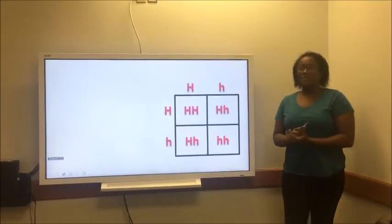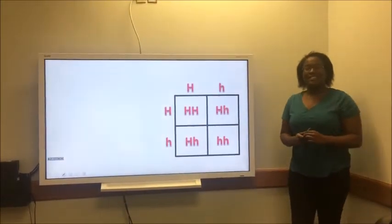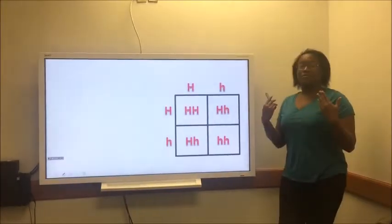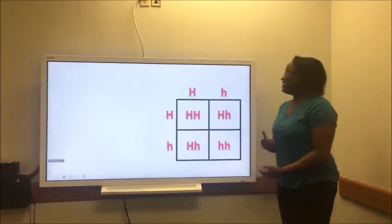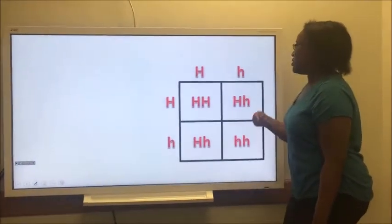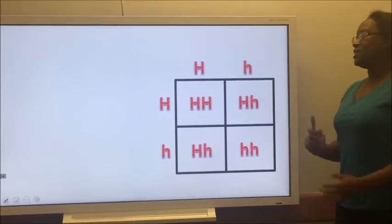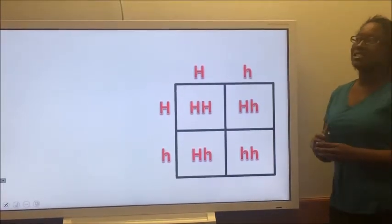Our example of a sex-influenced trait is the made-up trait of spottedness. In the Punnett square, the capital H represents non-spottedness, while the lowercase h represents spottedness.